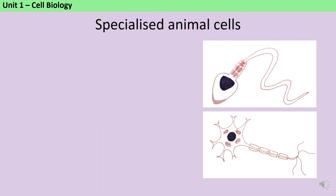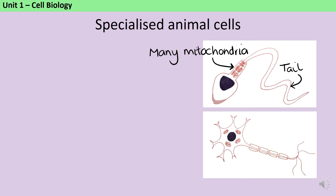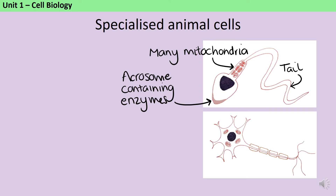Sperm cells are specialised in a number of ways to make them better adapted to carry out their function — in other words, fertilising an egg cell. Firstly, they have a flagellum, or tail, which enables those cells to swim in order to meet the egg. Secondly, they contain a large number of mitochondria; even though we find mitochondria in all eukaryotic cells, the presence of large numbers here means that the cell has access to a lot of energy, which it needs in order to reach that egg cell. When the sperm cell reaches the egg cell, it needs to penetrate it so that the two nuclei can fuse and fertilisation can take place. To help with this, the head of the sperm cell contains something called an acrosome, which has lots of enzymes that break down the wall of the egg and allow the two to merge.